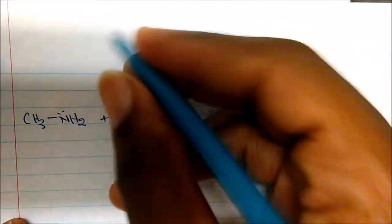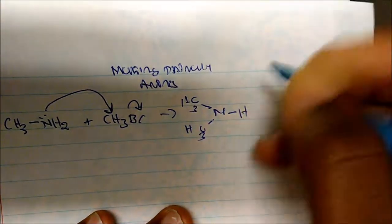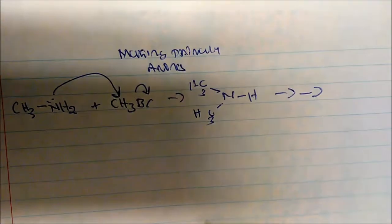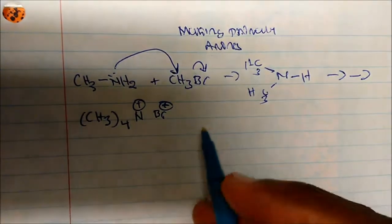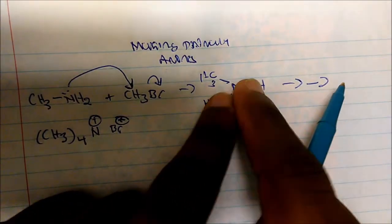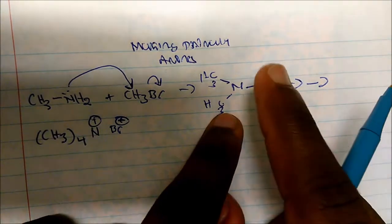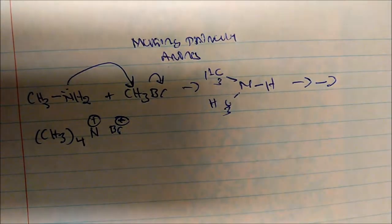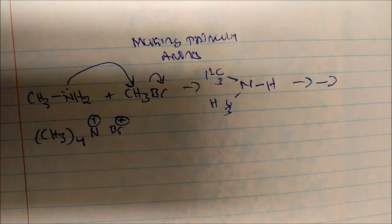When making amines, if we take CH3NH2 (methylamine) and add it to a normal alkyl halide, the nitrogen acts as a nucleophile and attacks the carbon to displace the bromine. The problem is the reaction keeps continuing — we can't control it. It eventually forms a quaternary nitrogen with a positive charge and a bromine with a negative charge. The product amine is actually a stronger nucleophile than the starting methylamine, so we can't control the reaction.